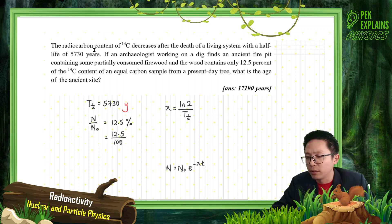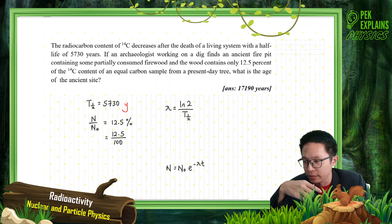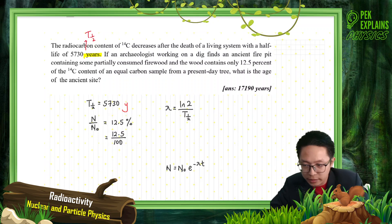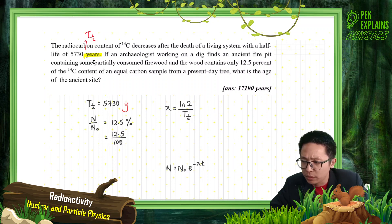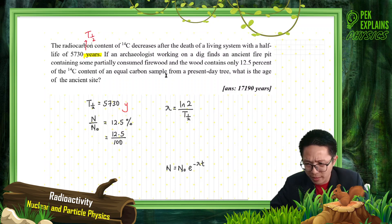The radiocarbon content of carbon-14 decreases after the death of a living system with a half-life of 5730 years. In this problem, we find an ancient fire pit containing some partially consumed firewood, and the wood contains only 12.5% of the carbon-14 content of an equal carbon sample from a present-day tree.